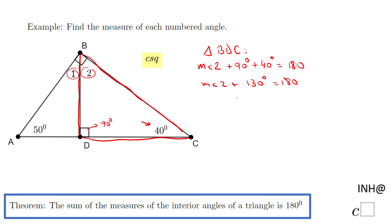We need to do one more step: subtract 130 from both sides. And we end up with the measure of angle 2 equals 50°.